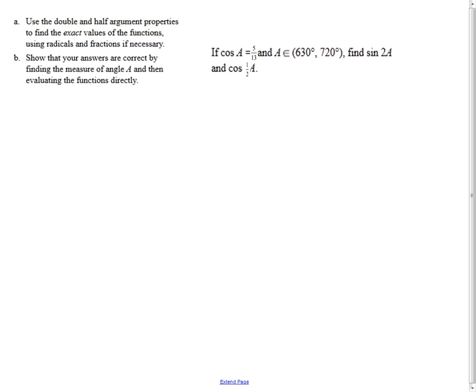So here's some information. If cosine of a, there's some angle a, has a cosine value of 5 thirteenths, and this angle is someplace between 630 degrees and 720 degrees. So, first it says, find the sine of 2a. So let's do that one, which has to do with a double argument property. Sine of 2a is equal to 2 times the cosine of a times the sine of a. Well, I know the cosine of a. I can put 5 thirteenths in for that, but what would be the sine of a?